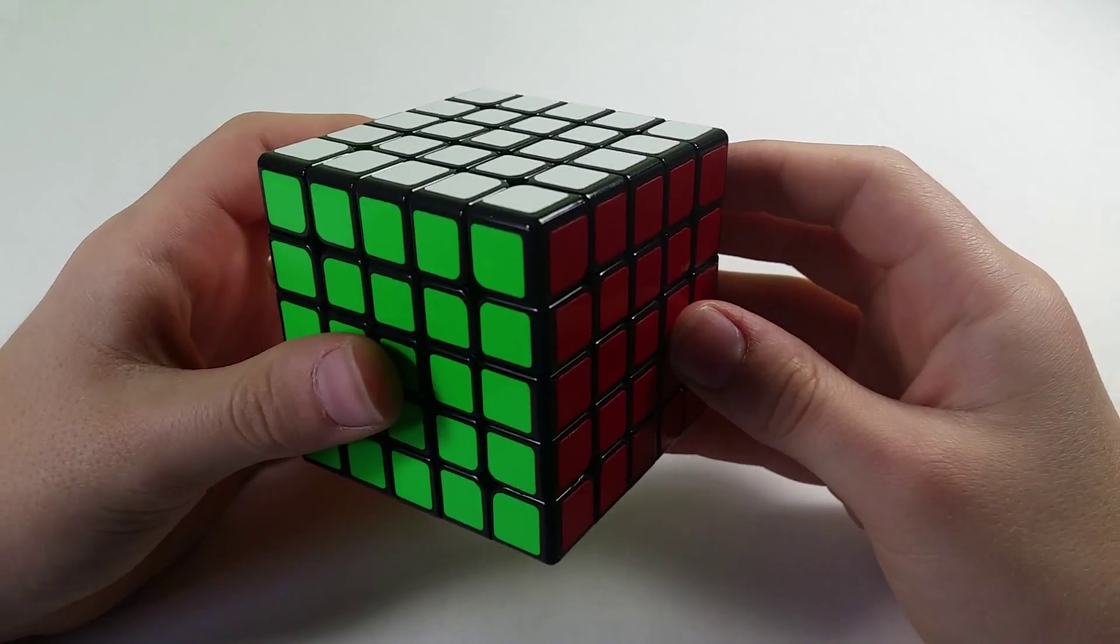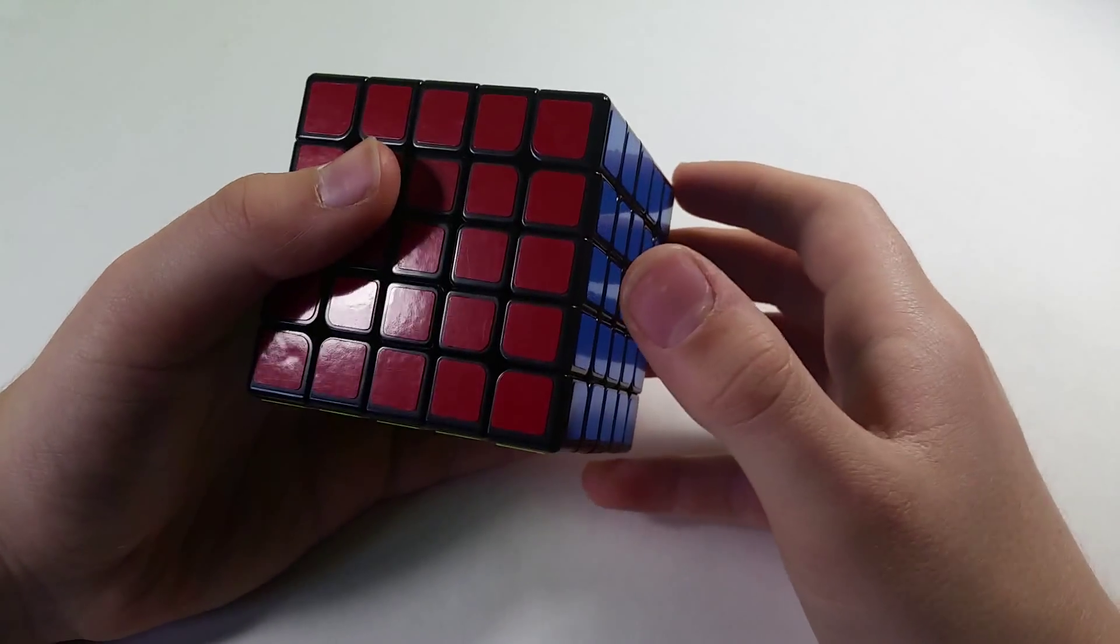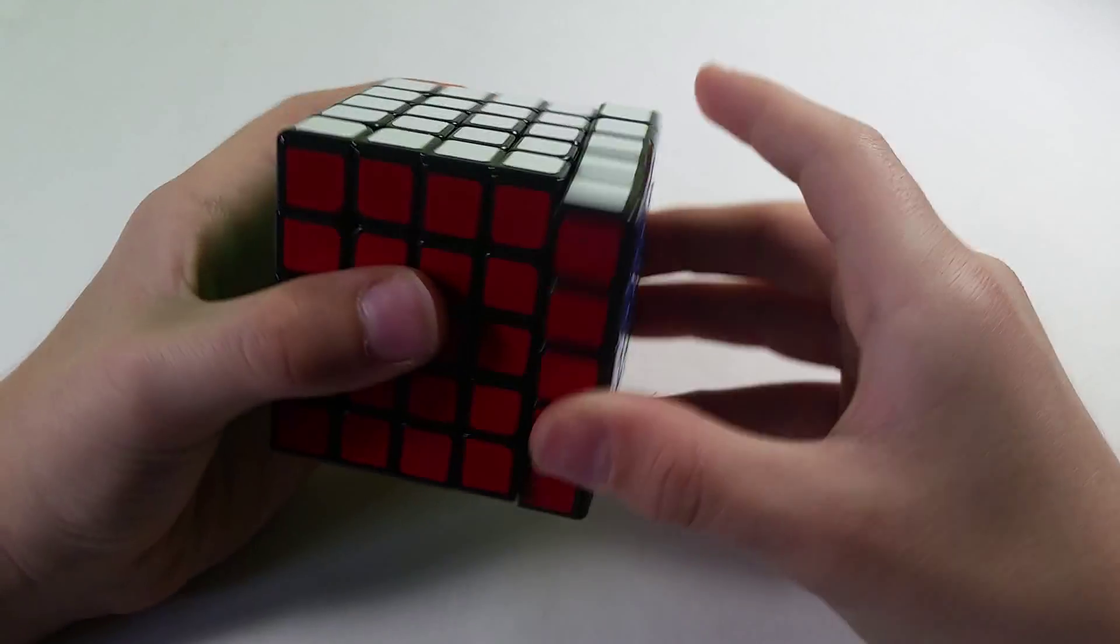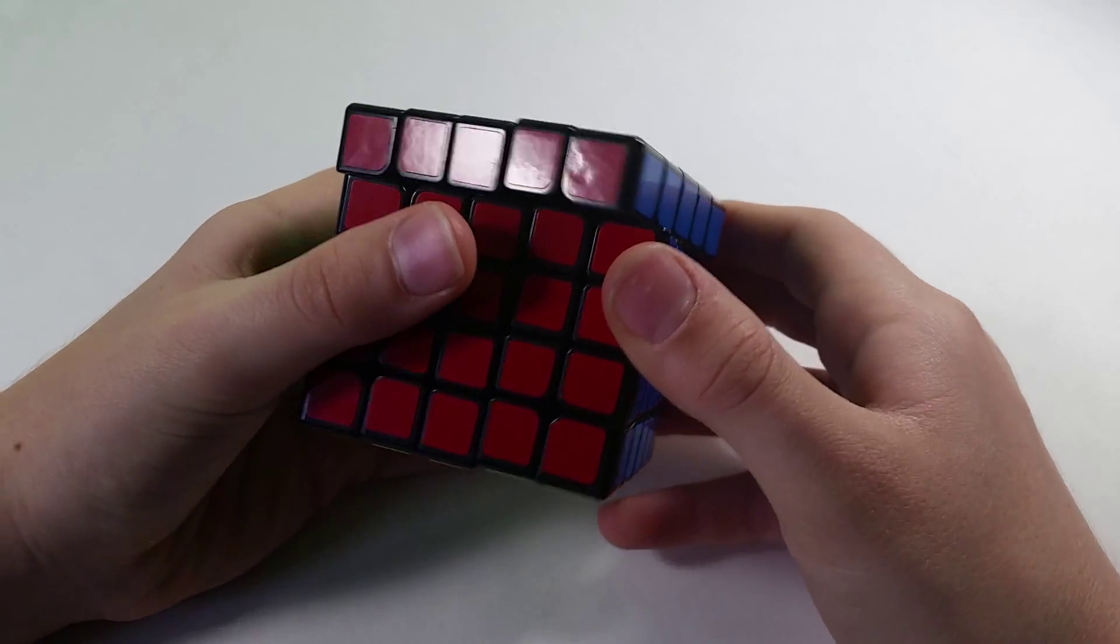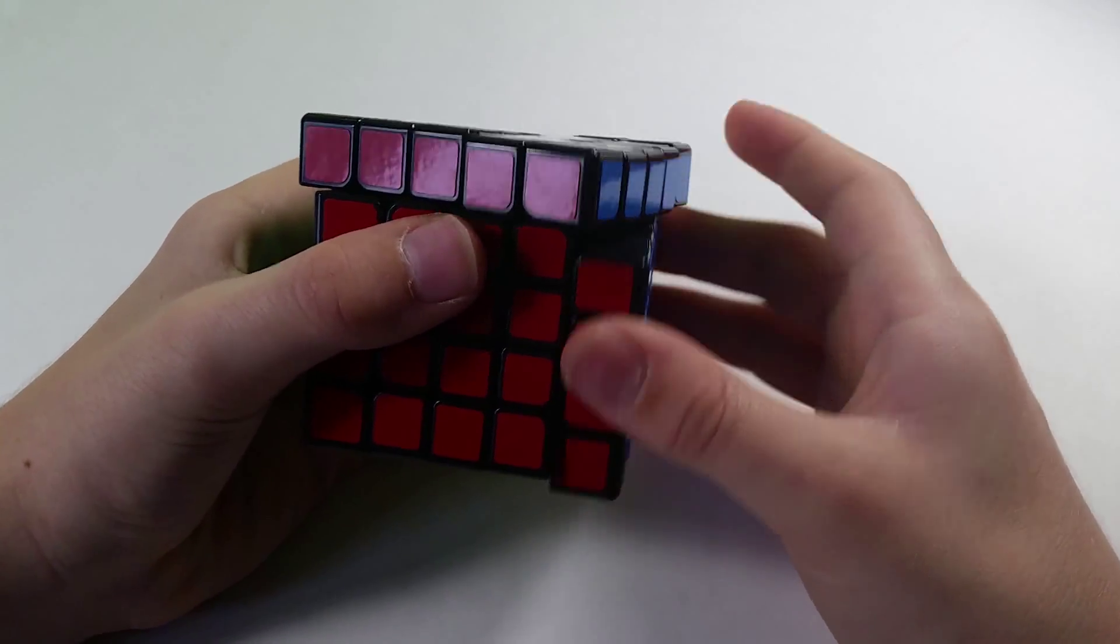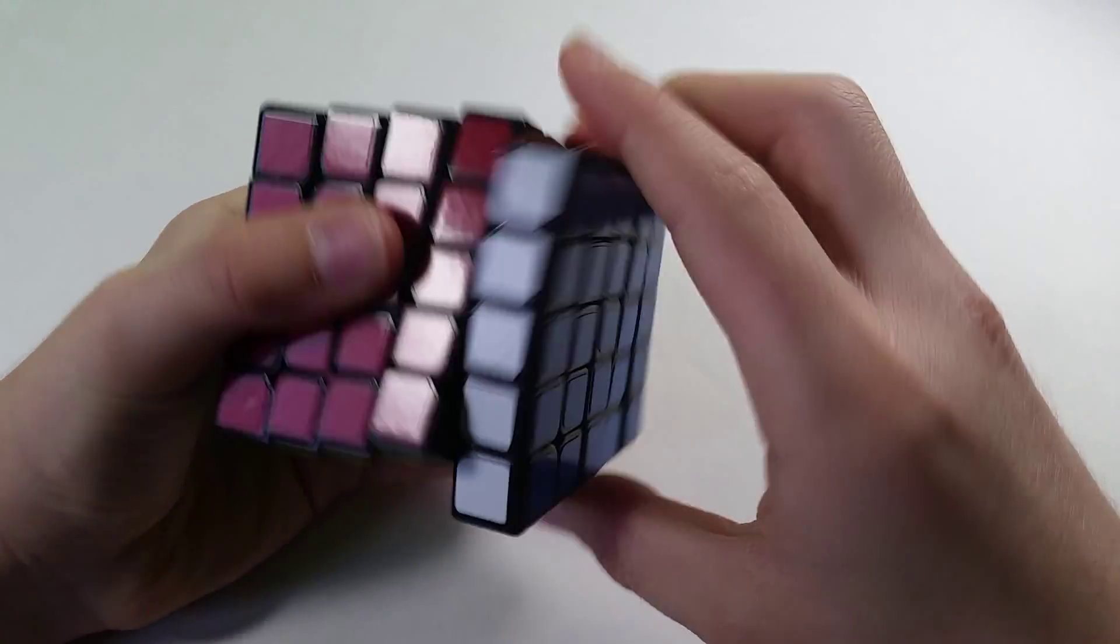Moving on to corner cutting. This cube is up to par with most modern 5x5s, corner cutting around here regular, and it has spectacular reverse at around here with a bit of force.